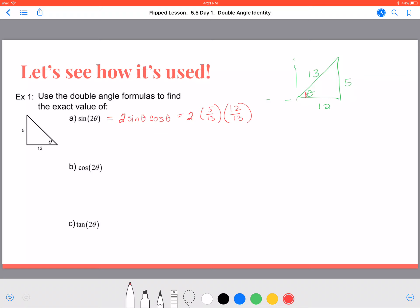So we're going to multiply 5 times 12 times 2, well that's equal to 10 times 12 or 120. And 13 times 13 is 169. So we will say that the sine of 2θ is equal to the ratio of 120 over 169.